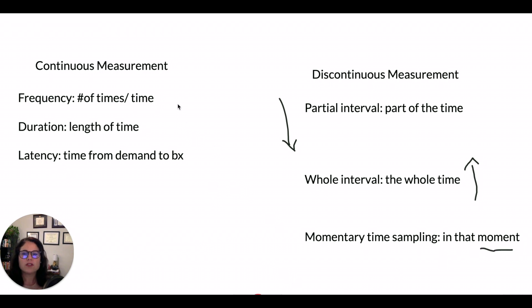So it's important to know when you would choose one measurement over the other. One of the key features is how frequently does this behavior happen? So some questions you want to ask yourself when choosing a continuous or discontinuous measurement procedure are, how much does the behavior occur?